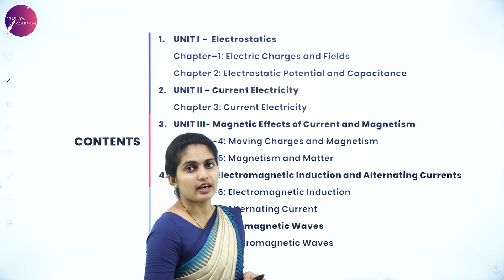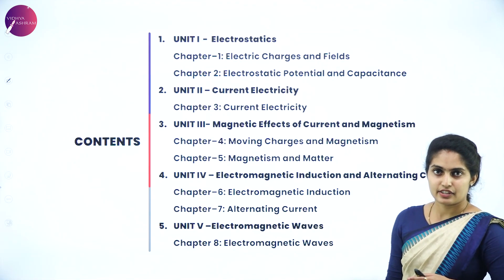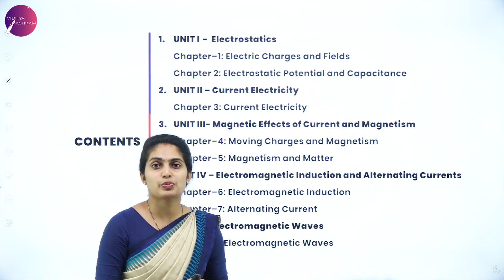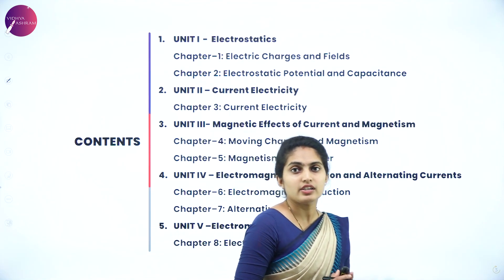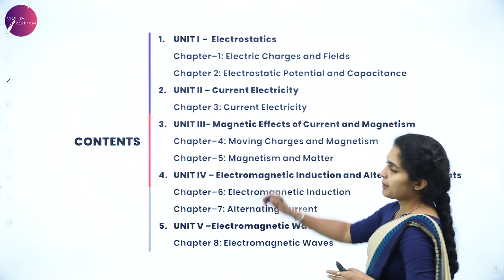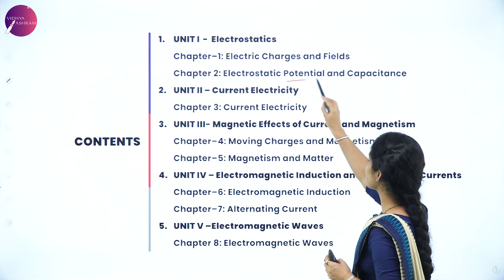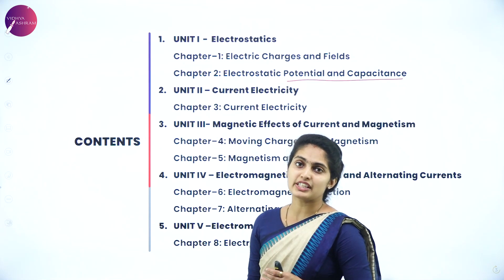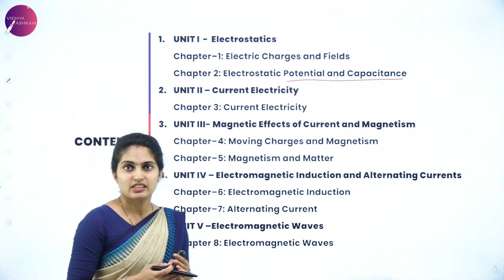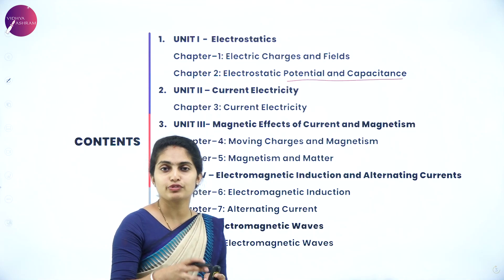Unit one consists of electrostatics — 'electro' means we study about electricity, and 'statics' means the charge which is at rest. Under unit one we have two chapters: Chapter 1 is Electric Charges and Fields, which deals with basic components like charges, what is meant by fields, how it is flowing, its properties, and how it influences point charges.